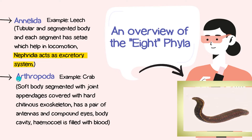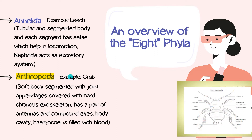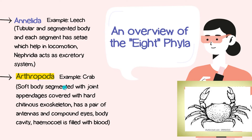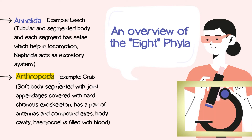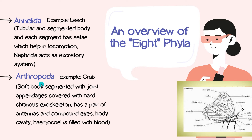Nephridia is a similar structure which basically helps the Annelida organisms to expel all those materials which they don't find useful anymore. Next is Arthropoda. Arthropoda is basically the phylum which has the most amount of organisms in it. There are many animals and insects. We can see them very commonly — grasshopper, butterfly — all are arthropods.